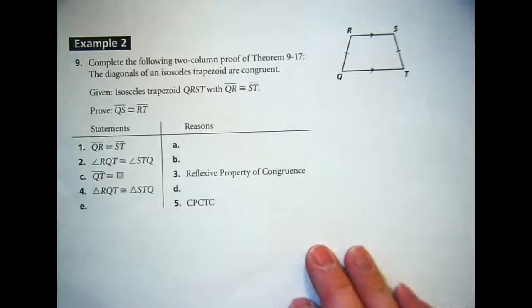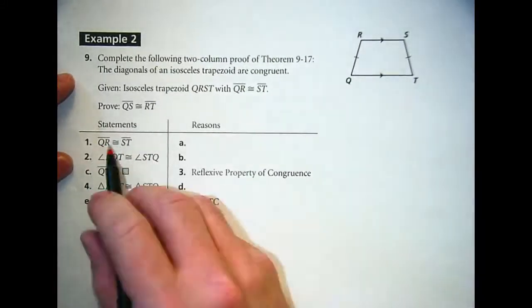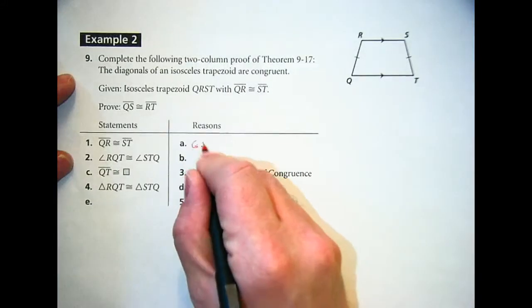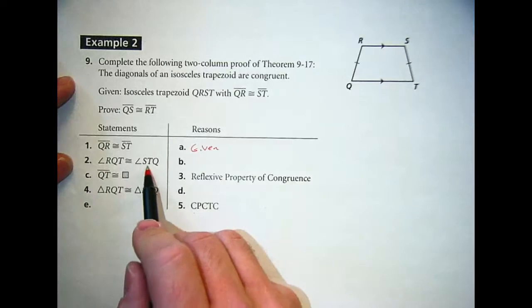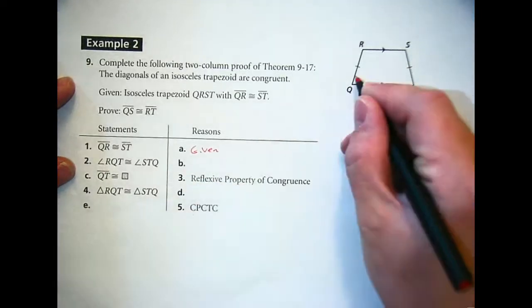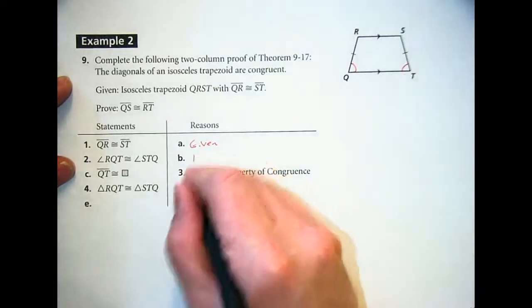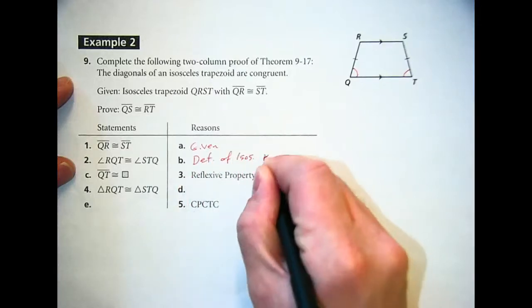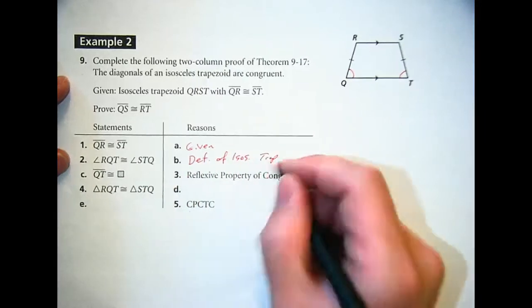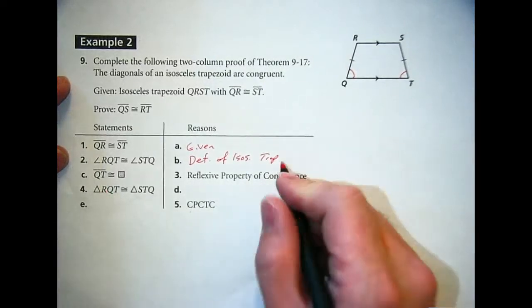Number 9, take a look at it. You get about 3 minutes to work on it, go. So letter R or letter A, QR is congruent to ST, is given. Angle QRT is congruent to angle STQ, that is definition of isosceles trapezoid, or you could say base angles of an isosceles trapezoid are congruent. Can you do that on the test, definition of isosceles trapezoid? Yeah.